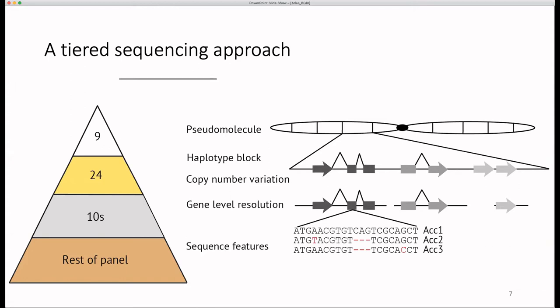Gold level sequencing could be performed for individuals representing the major clades in each ancestral group, and allow definition of haplotype blocks in the genome, as well as capturing copy number variation. This is important for the interrogation of all genes in the LD block of a region associated with a trait of interest.